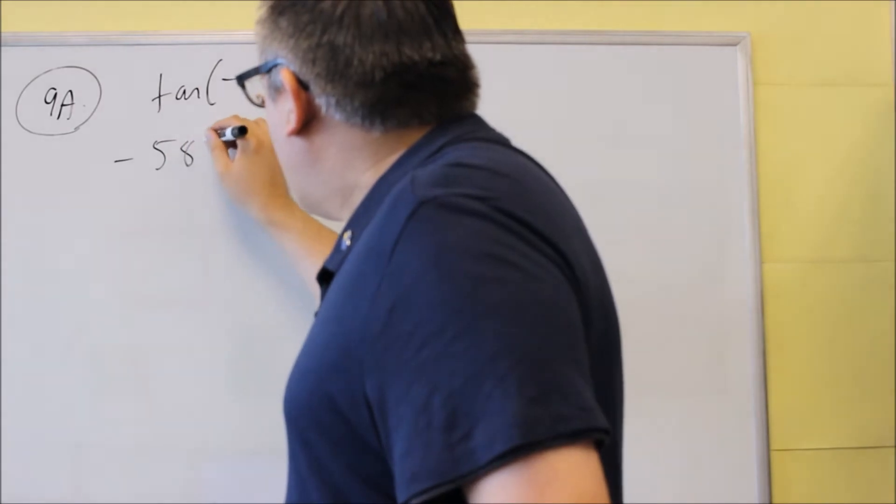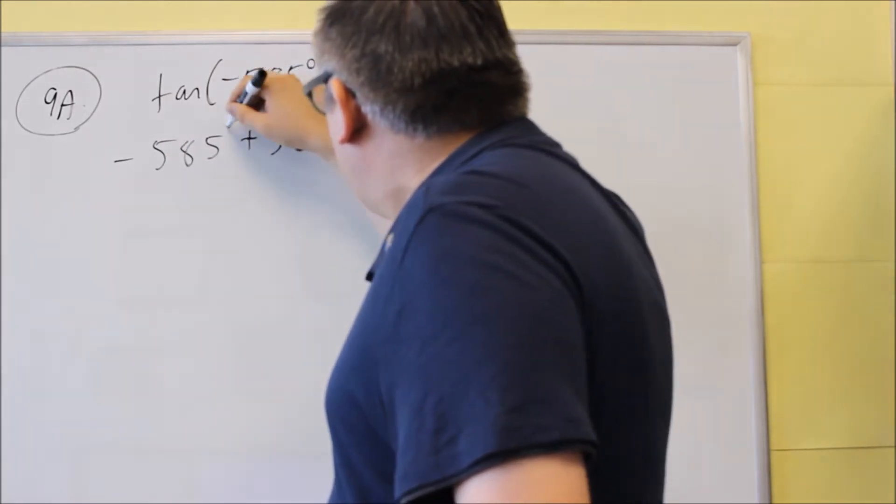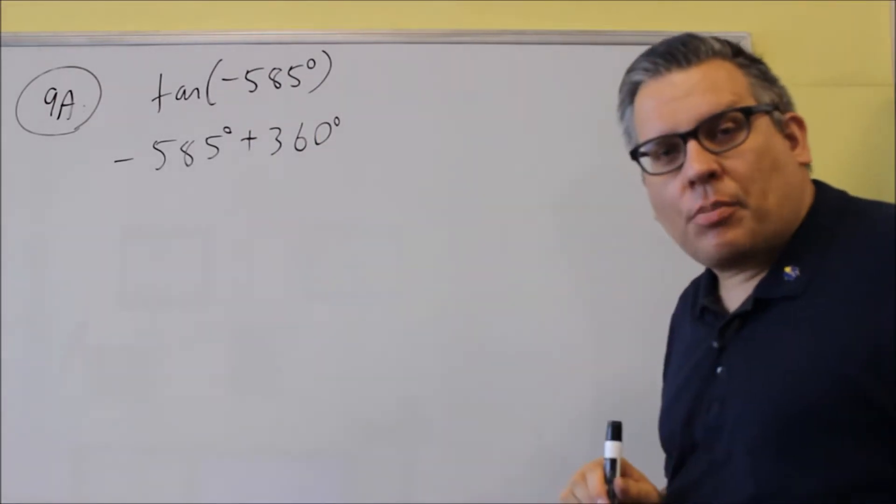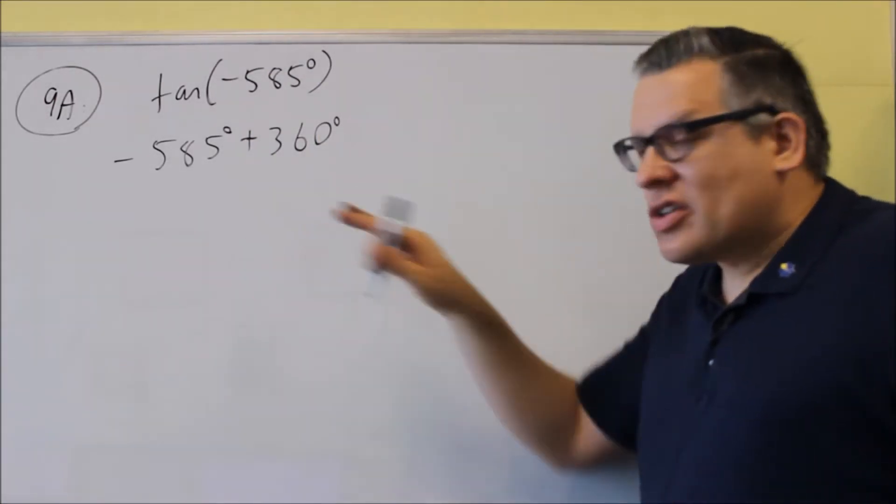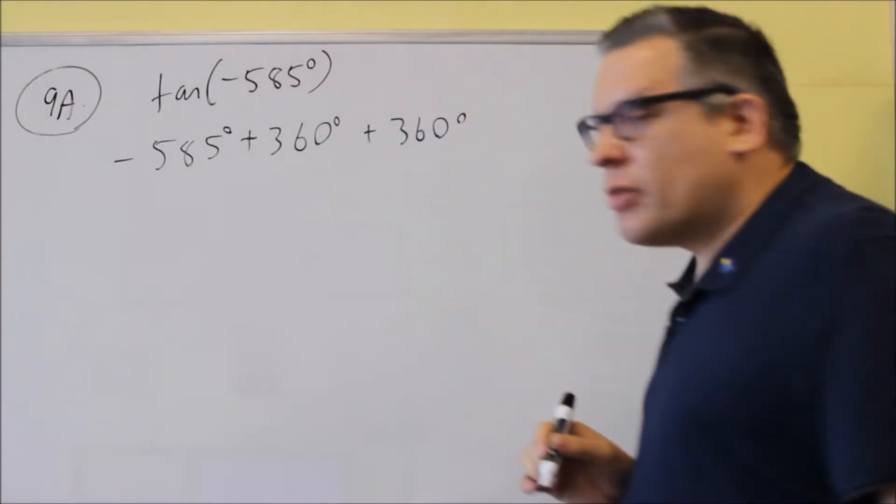We're going to do negative 585. If I add 360 to it, that's not going to give me a positive angle. So because I still have a negative angle, I want to add one more. I'm going to add another 360.